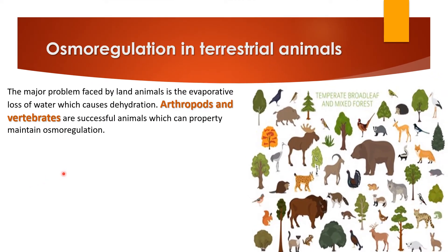Osmoregulation in terrestrial animals: maintaining constant water balance is the key to survival for terrestrial animals, because they are already losing water through the process of evaporation. Loss of water causes dehydration in them, as terrestrial animals live in dry places. Mostly, terrestrial animals lose water by evaporation from respiration, from body surfaces, excretion in the form of urine, and elimination in the form of feces. To avoid dehydration, they maintain their water balance using different strategies.